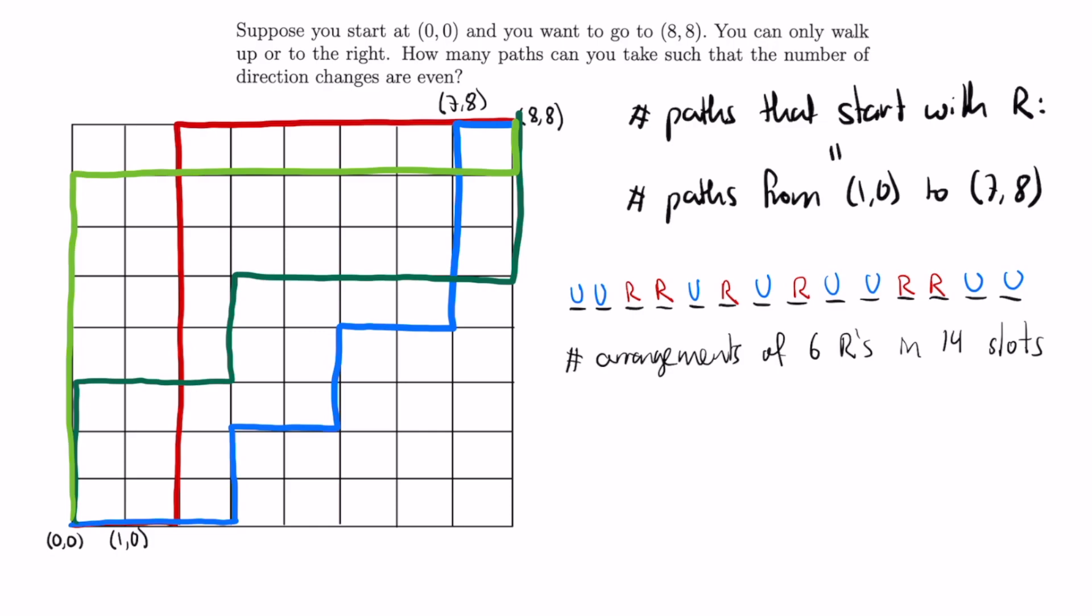In other words, we want to find the number of ways we can choose 6 slots out of these 14 slots that we will label with R's.